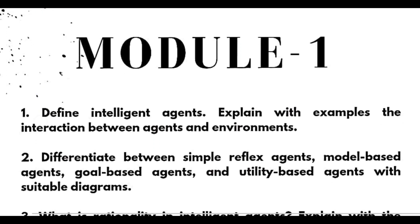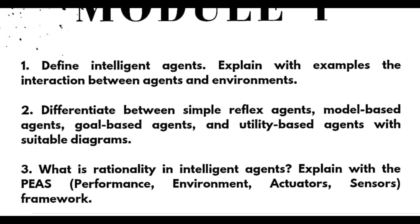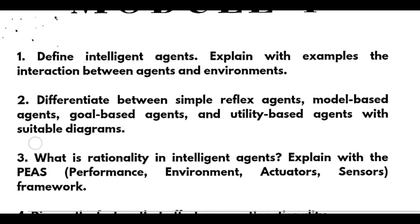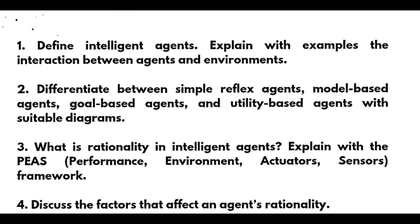In Module 1, the important questions include: define intelligent agents and explain with examples the interaction between agents and environments; and differentiate between simple reflex agents, model-based agents, goal-based agents, and utility-based agents with suitable diagrams. Notes are available via the link in the description box.